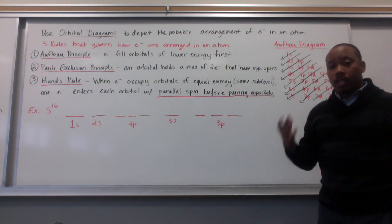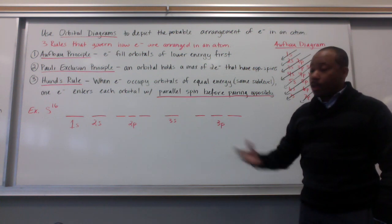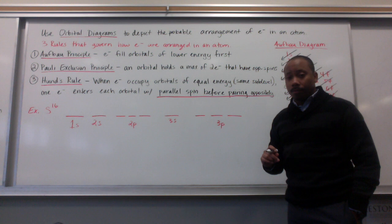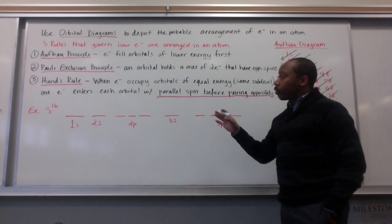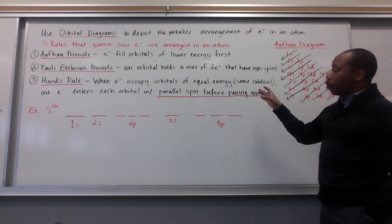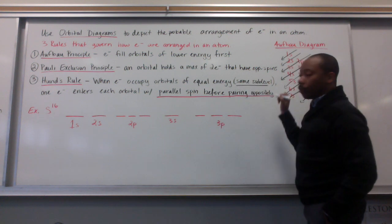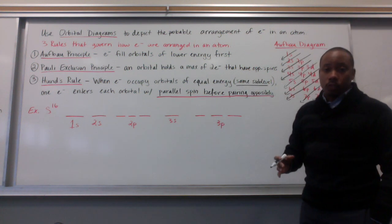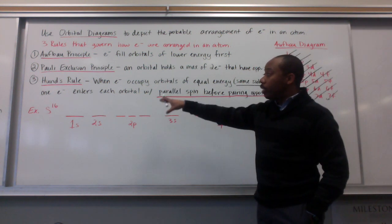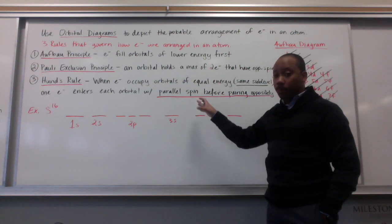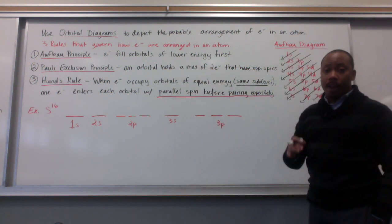My third rule is Hund's Rule. This says that when electrons occupy orbitals of equal energy, meaning they're in the same sublevel, one electron enters each orbital with parallel spin before it pairs oppositely.